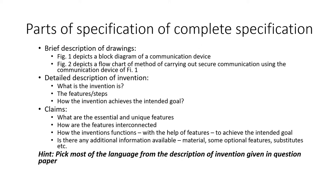Then comes the most important part of a complete specification: the detailed description of invention. Here you define what the invention is in a detailed manner — what are the different steps or features that make the invention and how those features are connected to or interacting with each other, and what steps are carried out for enabling those features to work together to help the invention achieve the intended goal. You also show how these features satisfy the need identified in the background section.